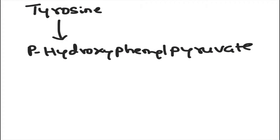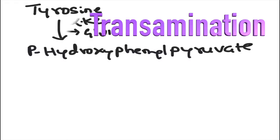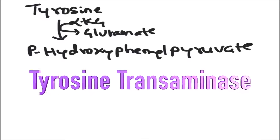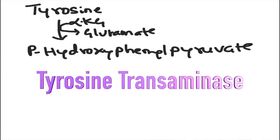Now, tyrosine in the catabolic pathway will be going into a transamination reaction. Like any transamination reaction, alpha-ketoglutarate is converted into glutamate and tyrosine is converted into P-hydroxyphenylpyruvate. This reaction is catalyzed by tyrosine transaminase enzyme, which is the first enzyme in the catabolism of tyrosine.